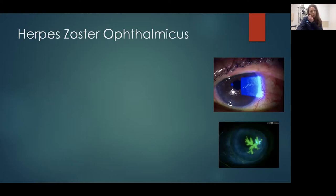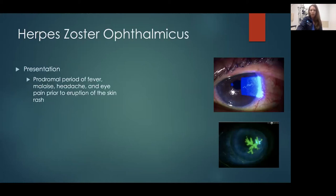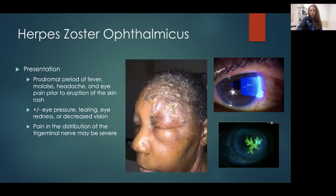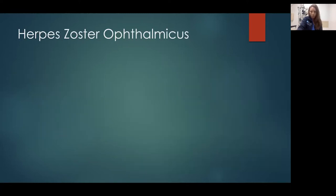Here are some photos of zoster ophthalmicus. Usually you'll have a prodromal fever, malaise, and headache. You can have eye pain before the eruption of the skin rash. They'll complain of eye pressure and tearing, redness, decreased vision — pretty nonspecific symptoms. But you'll notice they have pain in a certain trigeminal nerve distribution. In this photo, the patient's lesions are unilateral, all on the left side of the face, in the V1 distribution and all crusted over. On slit-lamp exam you'll see this staining pattern — pseudodendrites — which are pathognomonic for zoster ophthalmicus.